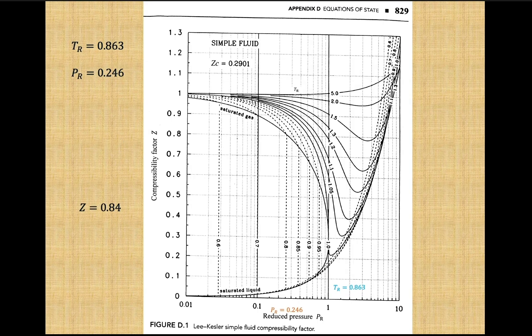To determine the compressibility factor, find where these values intersect on the chart. Let's start off with the reduced temperature of 0.863. On the chart, note that the reduced temperature values curve and then straighten as it gets closer to the y-axis.